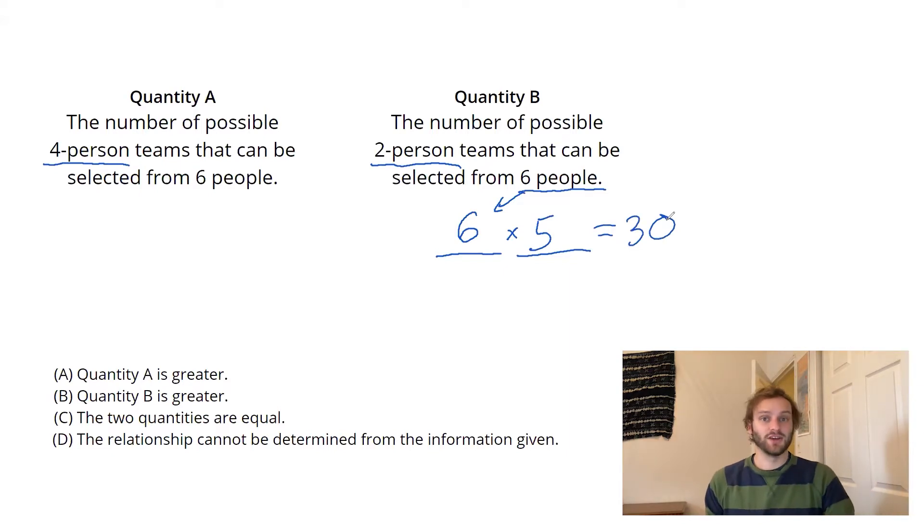That multiplies over to 30, and at first that makes it look like there were 30 ways I could pick my two-person team, but consider this. What if my two players were named Ann and Bill, we will say.